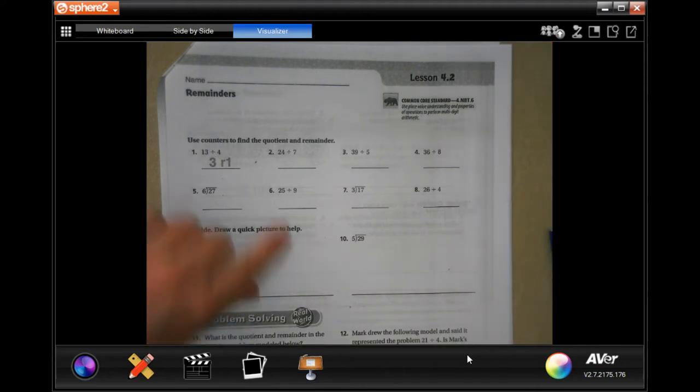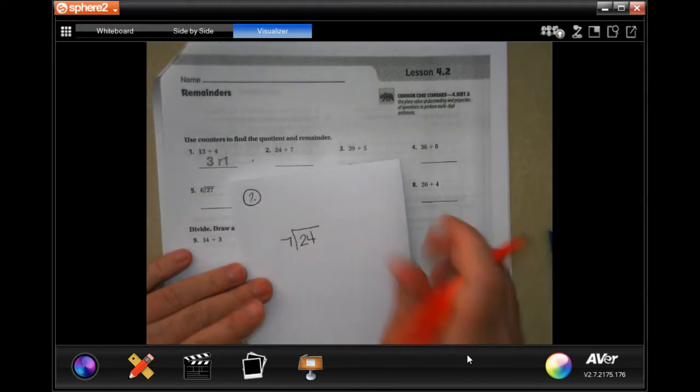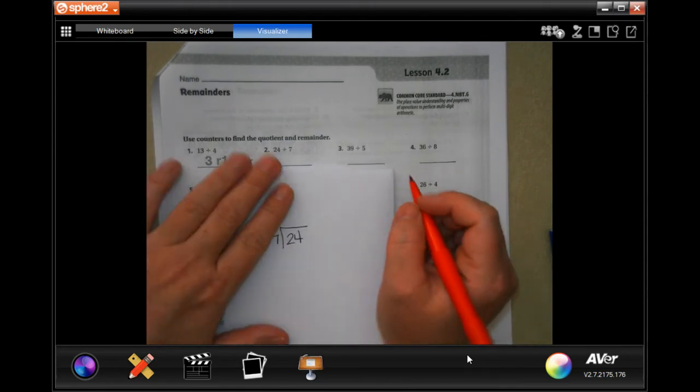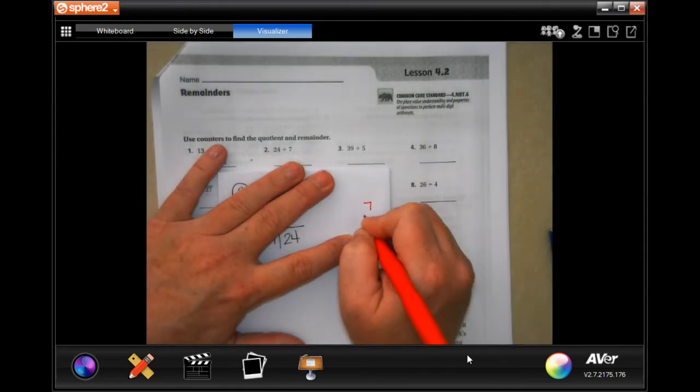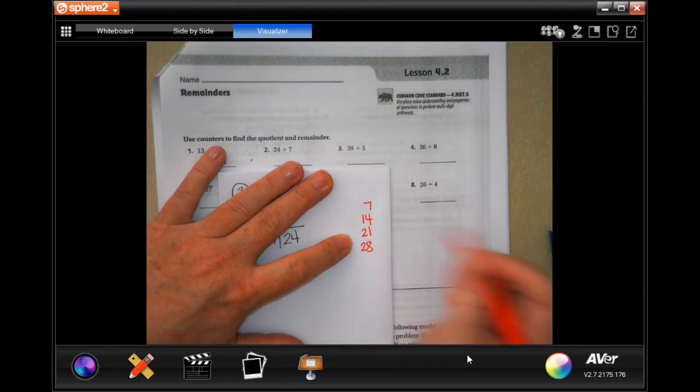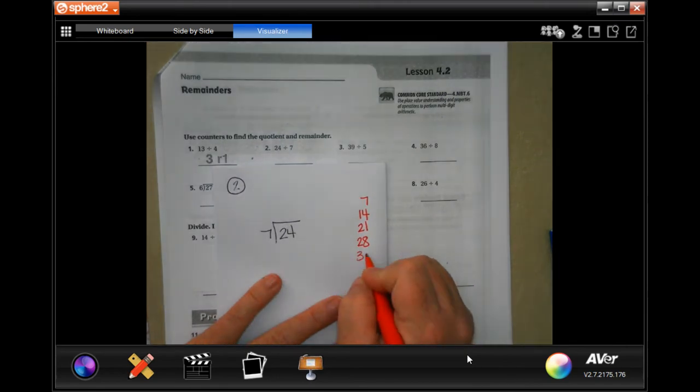So on number two, there's 24 divided by seven. I did that so it's a little bit easier for me. I'm gonna go over here and I'm gonna write down my multiples of seven which you guys should know by now.